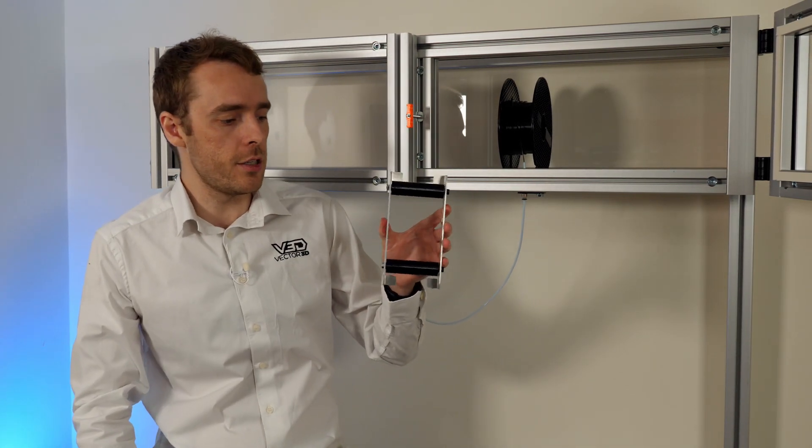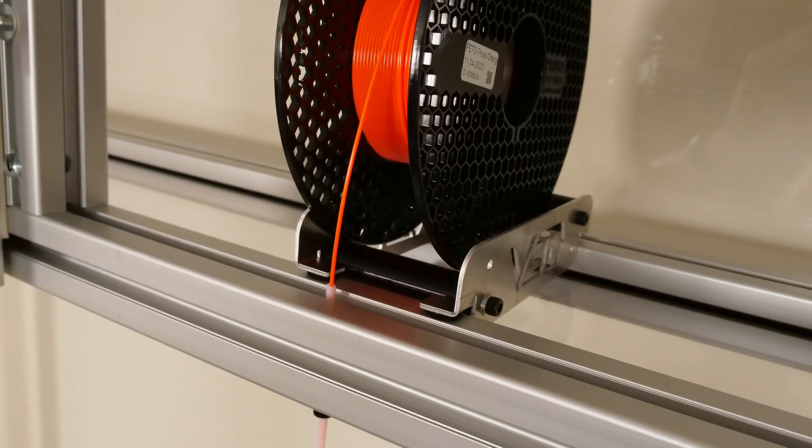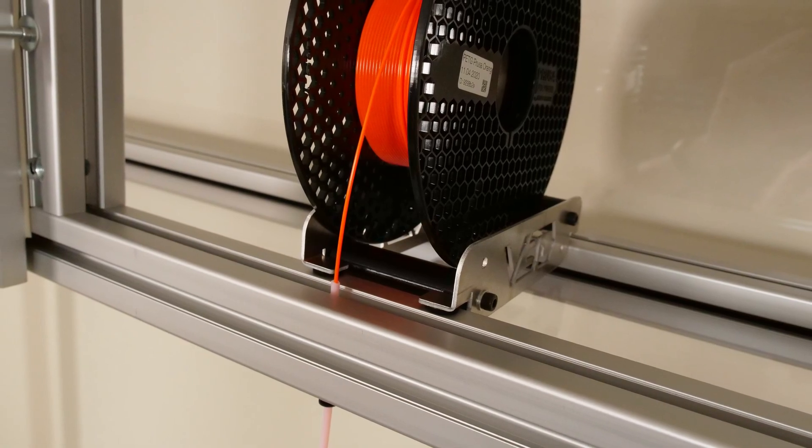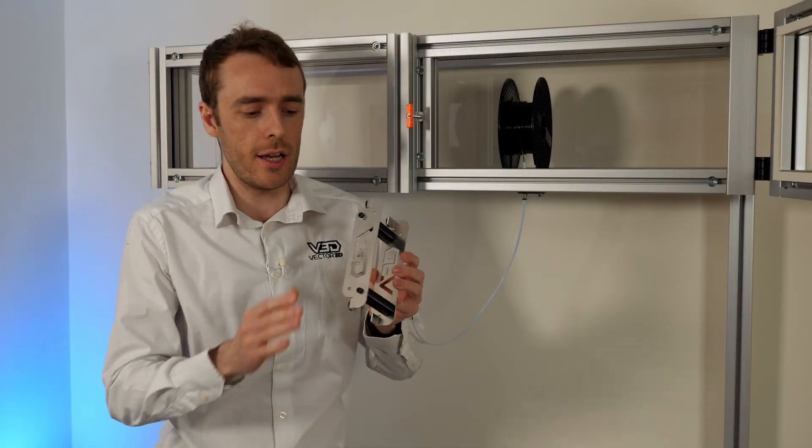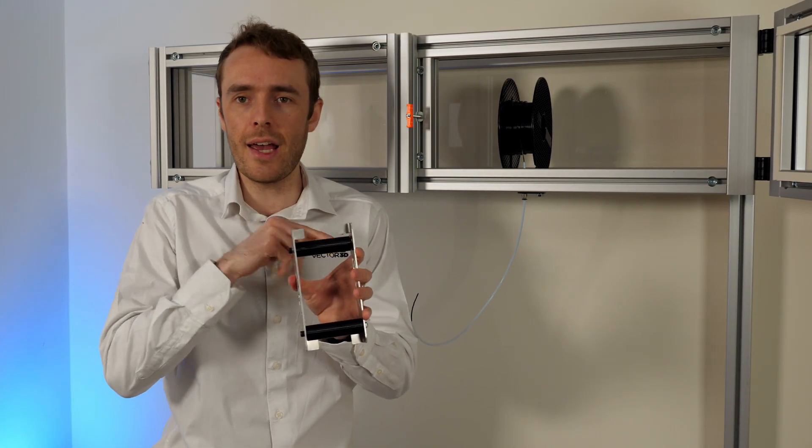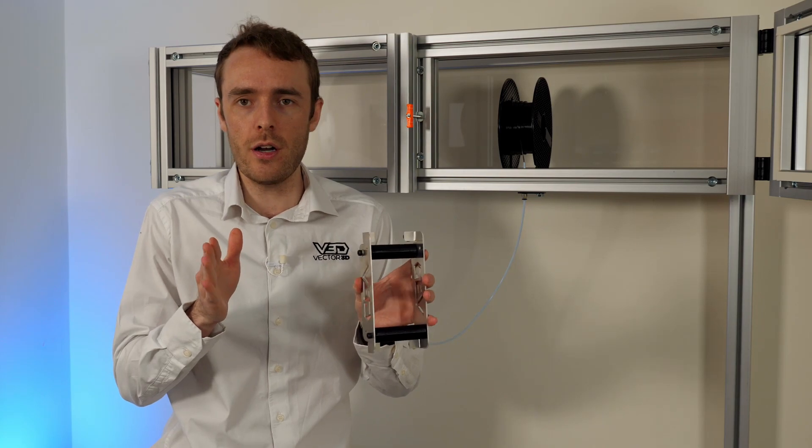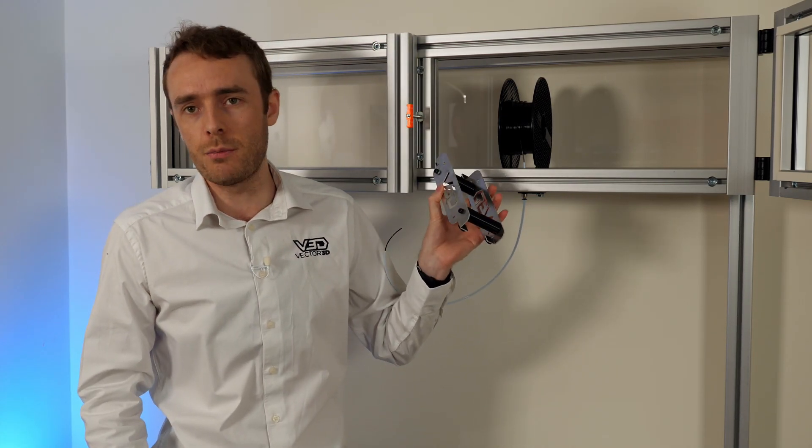So this is the final design spool holder nearly. We might not have these extra little feet on it at the end but this is basically what it's going to look like. It's very very simple you've got a couple of rollers for the filament and then sheet aluminum both sides. The advantage of this is you can print these rollers at any width you need if you need them extra wide if you need them extra narrow you can do that any size that you want to fit the exact spools that you use.